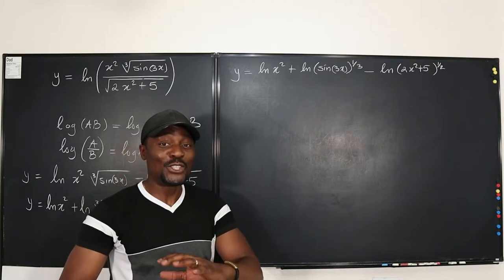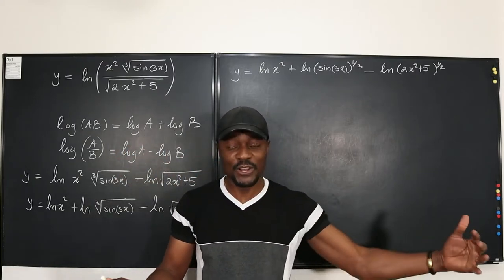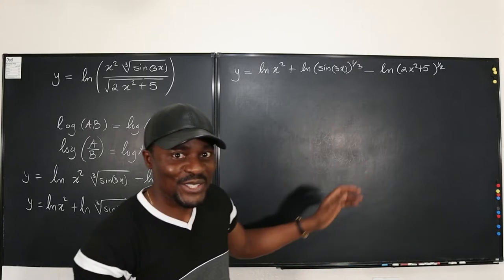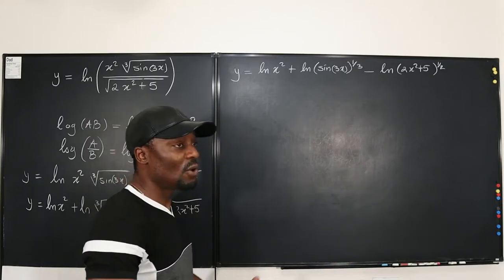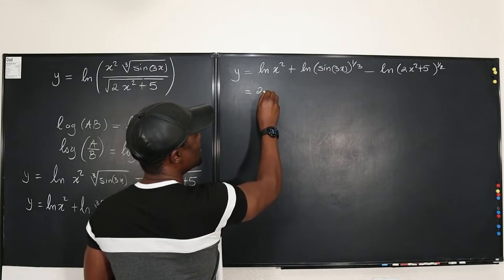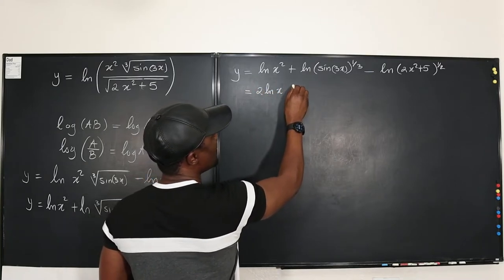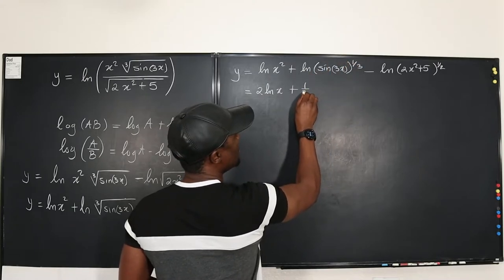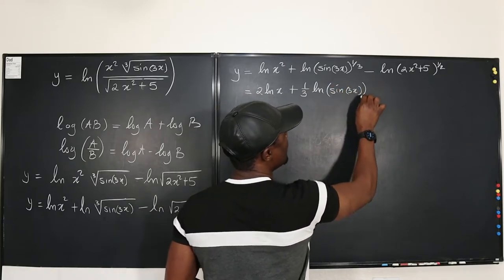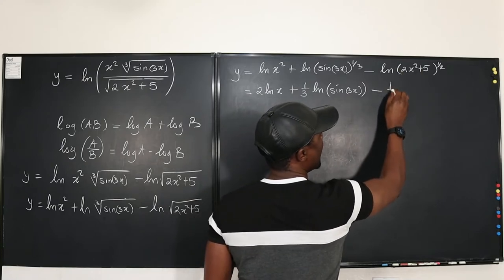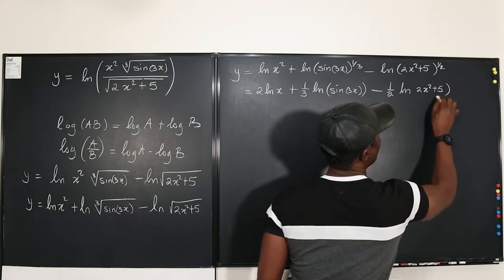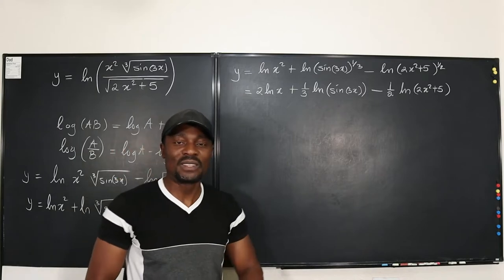Remember, you can do this to any function — if it looks too complicated, introduce natural log to both sides. Now we have all the exponents, so we can take them down as coefficients. This becomes: y equals 2 ln of x, plus one-third times the natural log of sine 3x, minus one-half times the natural log of 2x squared plus 5. We're done with the algebraic simplification — it's time to do the calculus part.